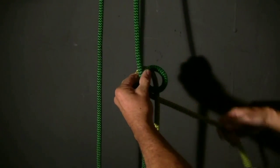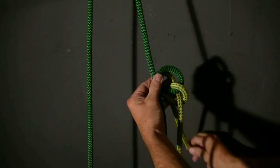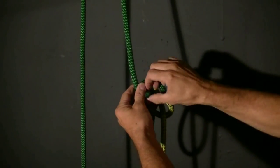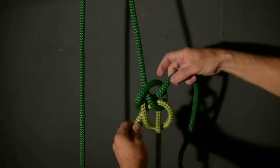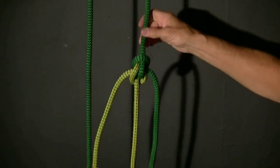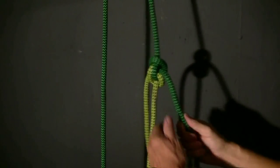You put the two loops one on top of the other. Now I just pass the tails through the hole. Give the tails a tug, set the knot, and you have the perfect zeppelin bend.